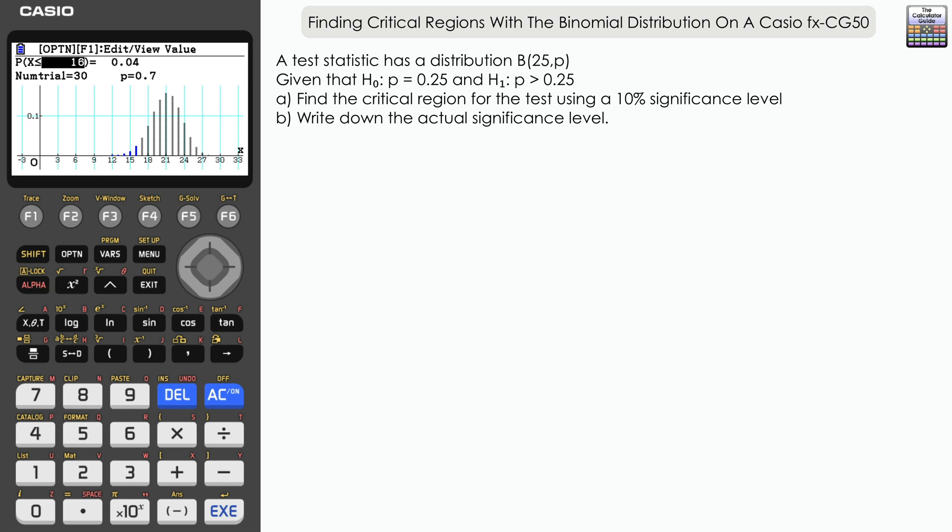We've got to find the critical region for the test using a 10% significance level this time, and then once again write down the actual significance level. So very similar to the first question, but this time we've got probability greater than 0.25. It's a one-tail test, but we're dealing with the upper tail.